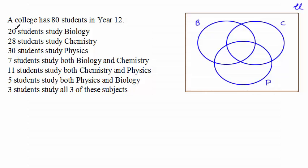If you started up here, 20 students doing biology for instance, that 20 is scattered amongst these four regions here, here, here and here. And we don't know how that is split up.